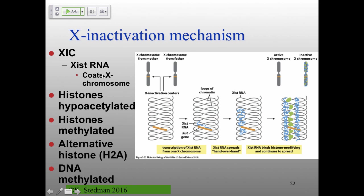First, XIST RNA spreads to the rest of the chromosome. Then acetyl groups are removed from histones — histone acetyltransferases normally neutralize positive charges to allow transcription. Removing acetyl groups increases positive charges and compaction. Then methylation of histones shuts things down further. Histones are switched out, including H2A. Finally, DNA is methylated — the ultimate modification that shuts down and compacts everything, aided by methylated DNA binding proteins.